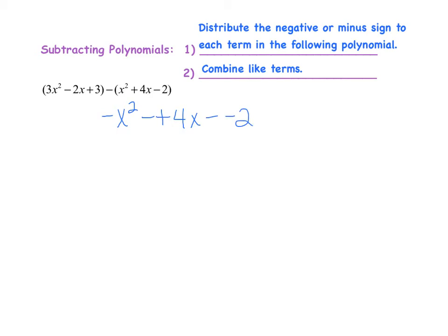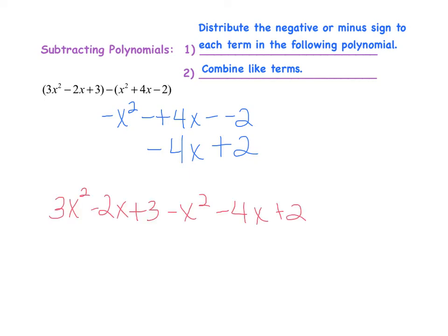What we're really doing is saying: minus x squared, and minus positive 4x, and minus negative 2. If we know anything about positives and negatives — when we subtract a positive number, we are simply subtracting it, so it looks like minus 4x. And when we are subtracting a negative number, minus a negative is the same as adding. So once you've distributed that negative sign, you're ready to combine like terms.